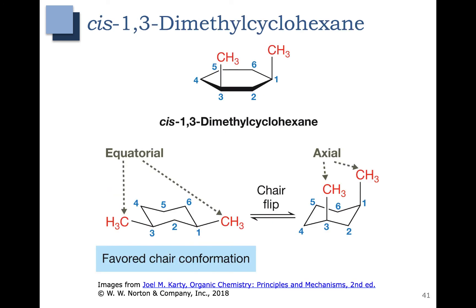Let's look at cis-1,3-dimethylcyclohexane. You can see that the two methyl groups are on the same side, so in our chair conformations we want to do the same thing. The methyl group at carbon 1 is up and the methyl group at carbon 3 is also up. In one case they are both equatorial. In the ring flip they are again both up but now they're axial. The two axial groups are going to have a lot of 1,3-diaxial strain, so the favored chair conformation is the one where the two methyl groups are equatorial.